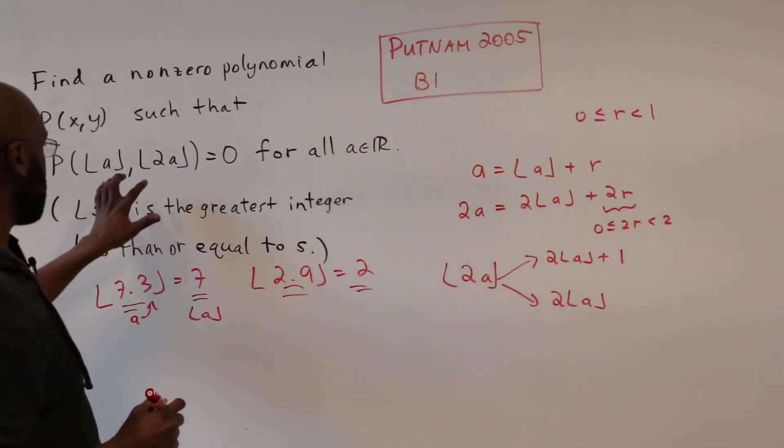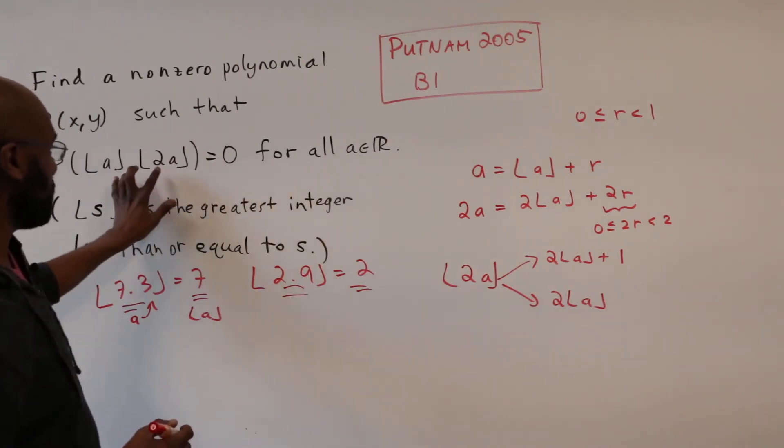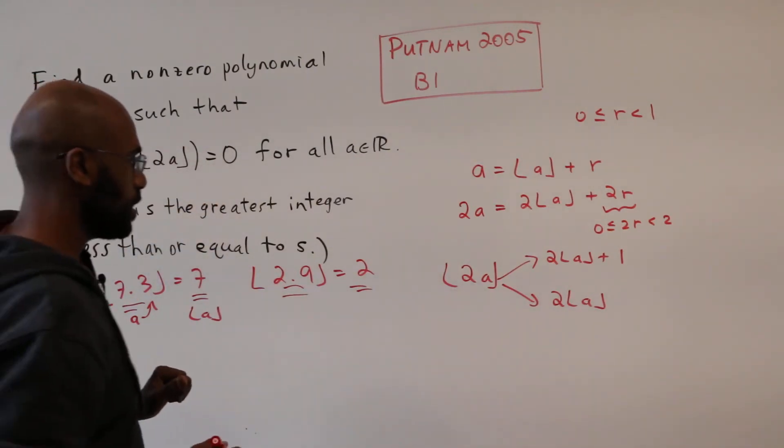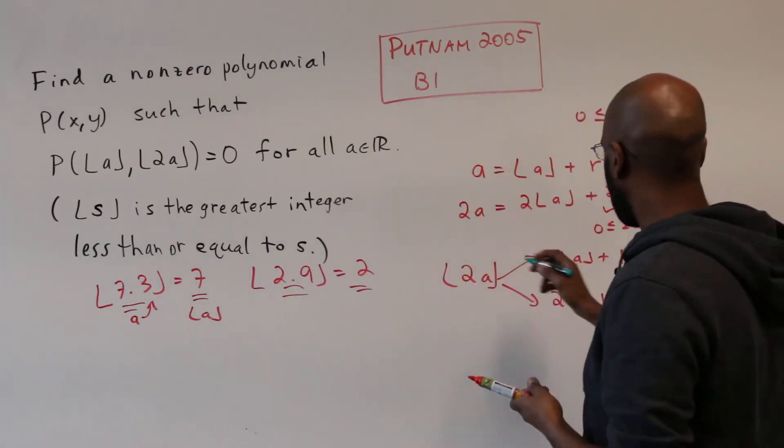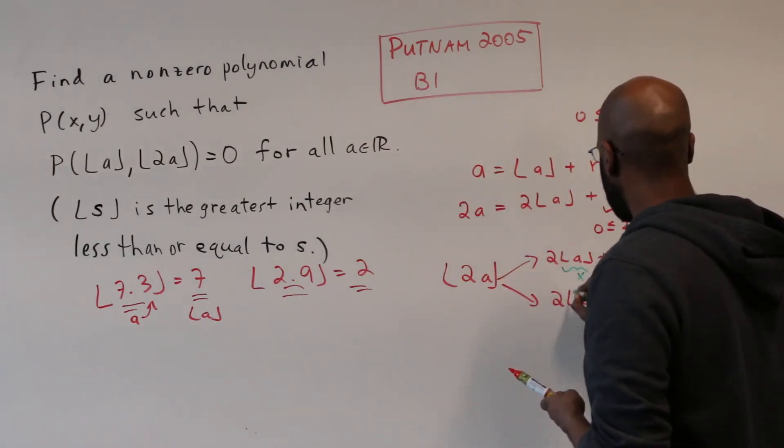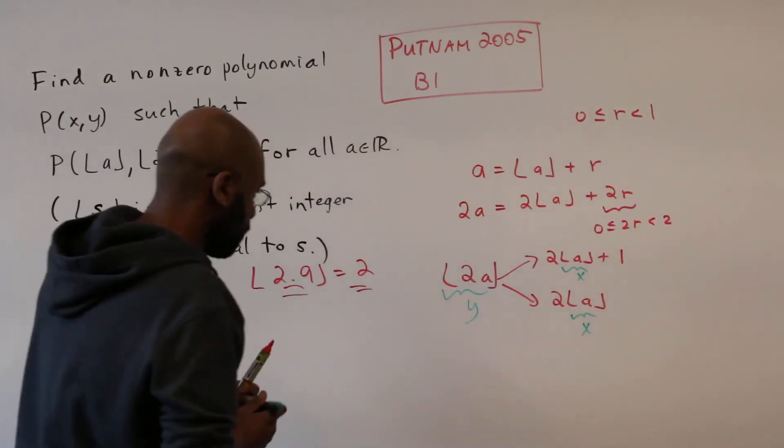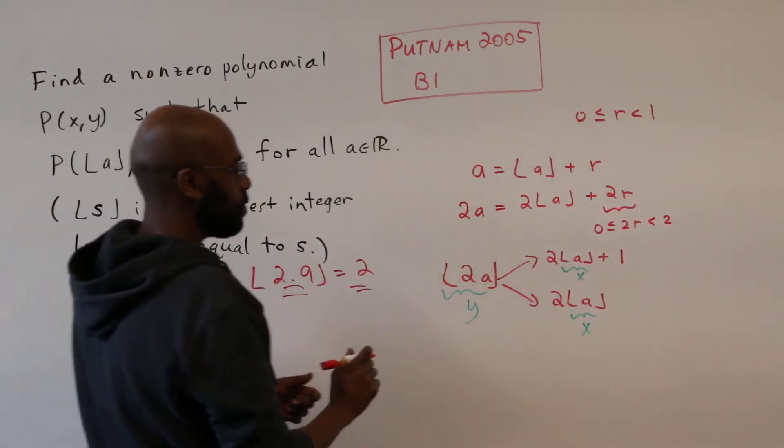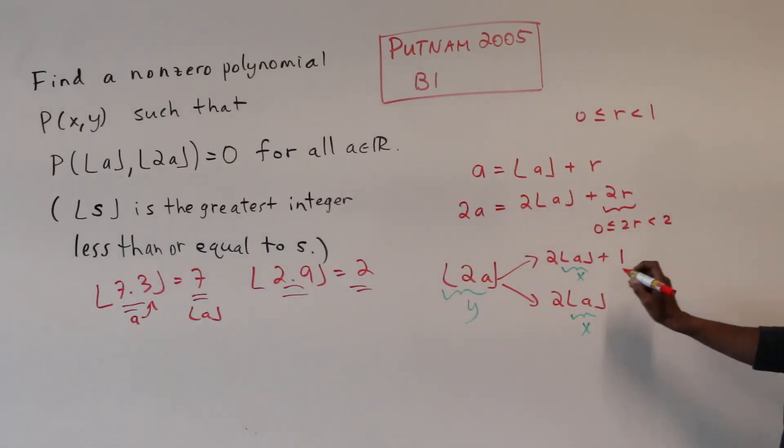Okay, so how does that tell us anything about a polynomial that would be 0 for all of these pairs? Well, we notice here that our first coordinate x is this quantity here and our second coordinate y is this quantity here. So what we're saying here then is that no matter what value of a we pick for these pairs of coordinates,